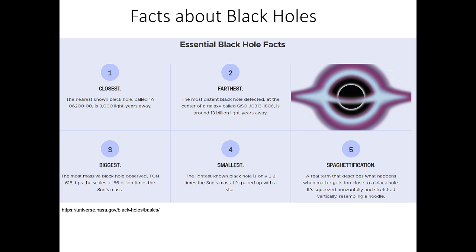Now here are some facts about black holes. The nearest known black hole, called 1A0620000, is 3,000 light years away. The farthest black hole is at the center of a galaxy called QSOJ013, I'm not going to say the number, but you can read it right here, and it's around 13 billion light years away.